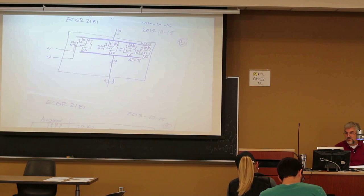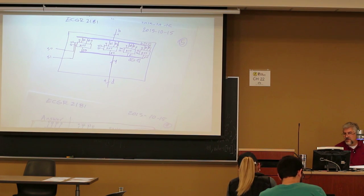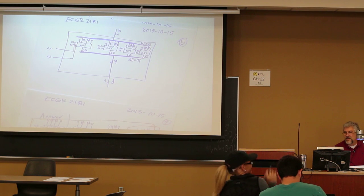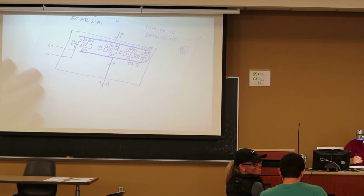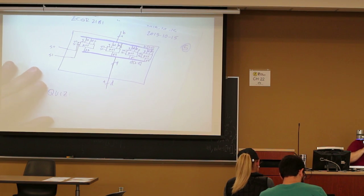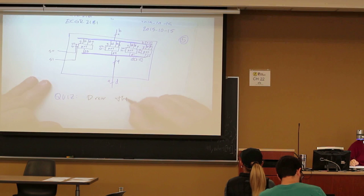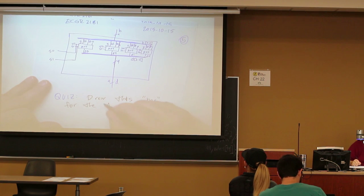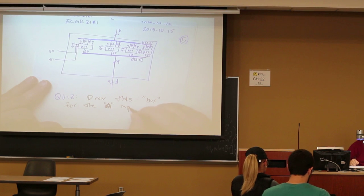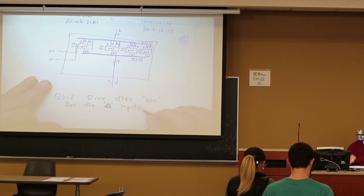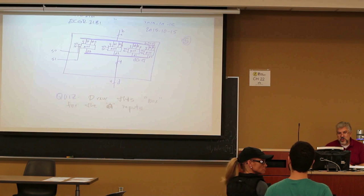For your quiz, take out a separate sheet of paper. We'll take a quick vote — do it in pairs or in fours? Alright, take out a sheet of paper and draw this box for the A inputs.